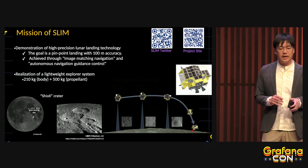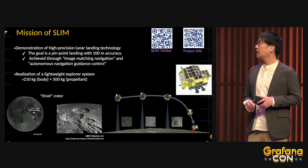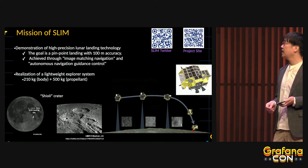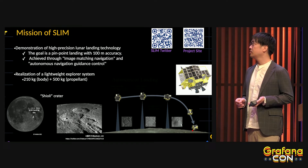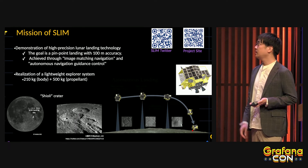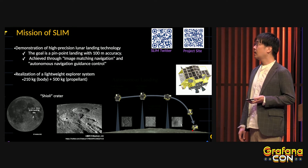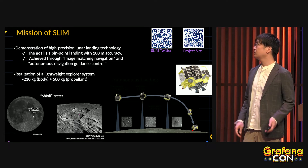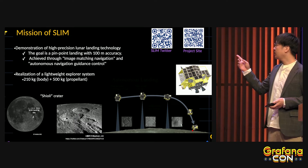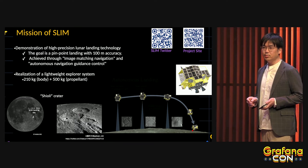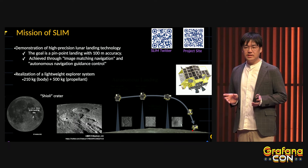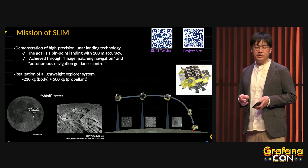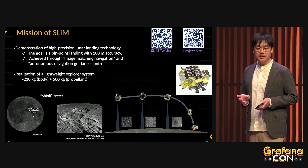Now let me introduce the SLIM mission. SLIM is dedicated to demonstrating high-precision moon landing technology, and its goal is to achieve a pinpoint landing with 100-meter accuracy. This will be achieved through image-matching navigation and autonomous navigation guidance control. This figure shows that SLIM observes a lunar crater and matches it with a preloaded image.